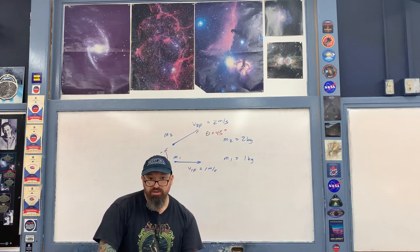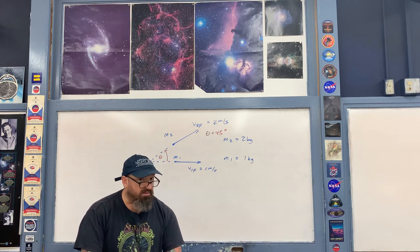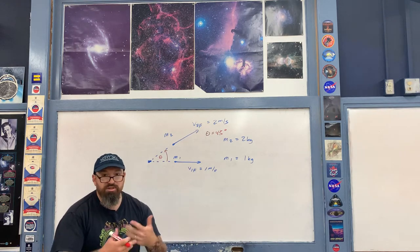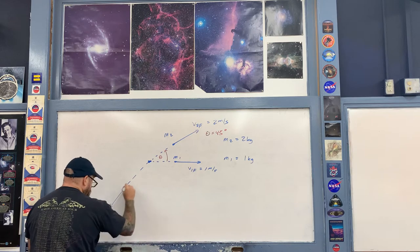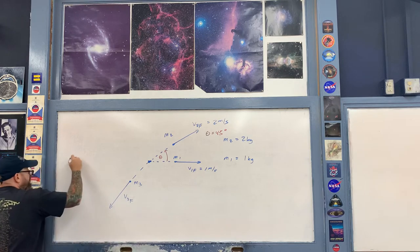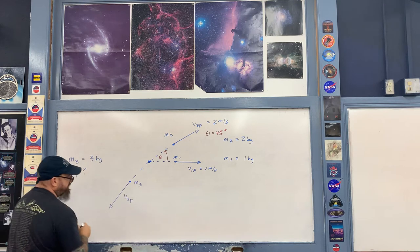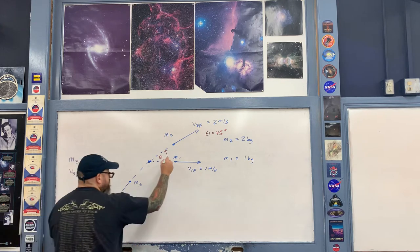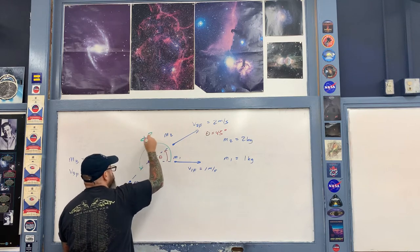The third piece m3 explodes off in some unknown direction. Using mathematical intuition, we can guess it goes into the third quadrant, which we'll verify mathematically. We define an angle phi in the diagram to describe the direction of v3_final. The mass m3 is given as three kilograms, but we don't yet know the magnitude or direction of v3_final.